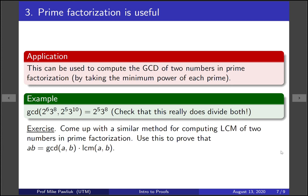As an exercise, come up with a similar method for computing the least common multiple of two numbers that are given in prime factorization, and then use this to prove the fact that the GCD times the least common multiple is AB. If you do this, you'll have a very deep understanding of GCD and least common multiple.